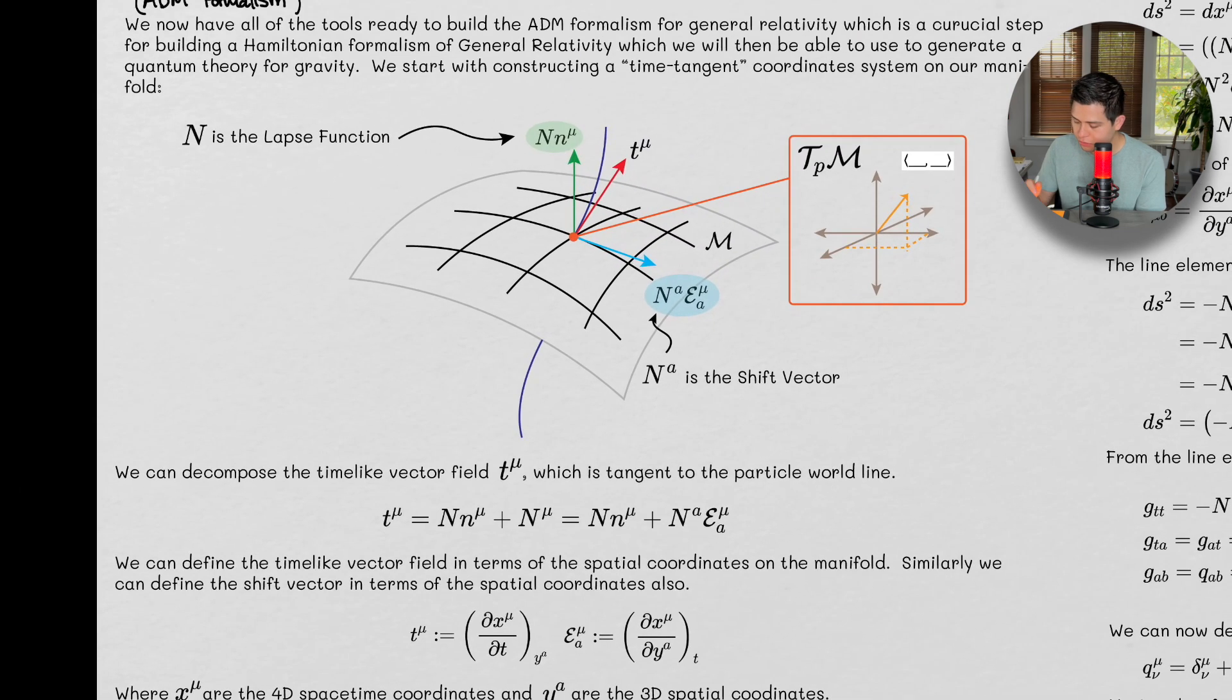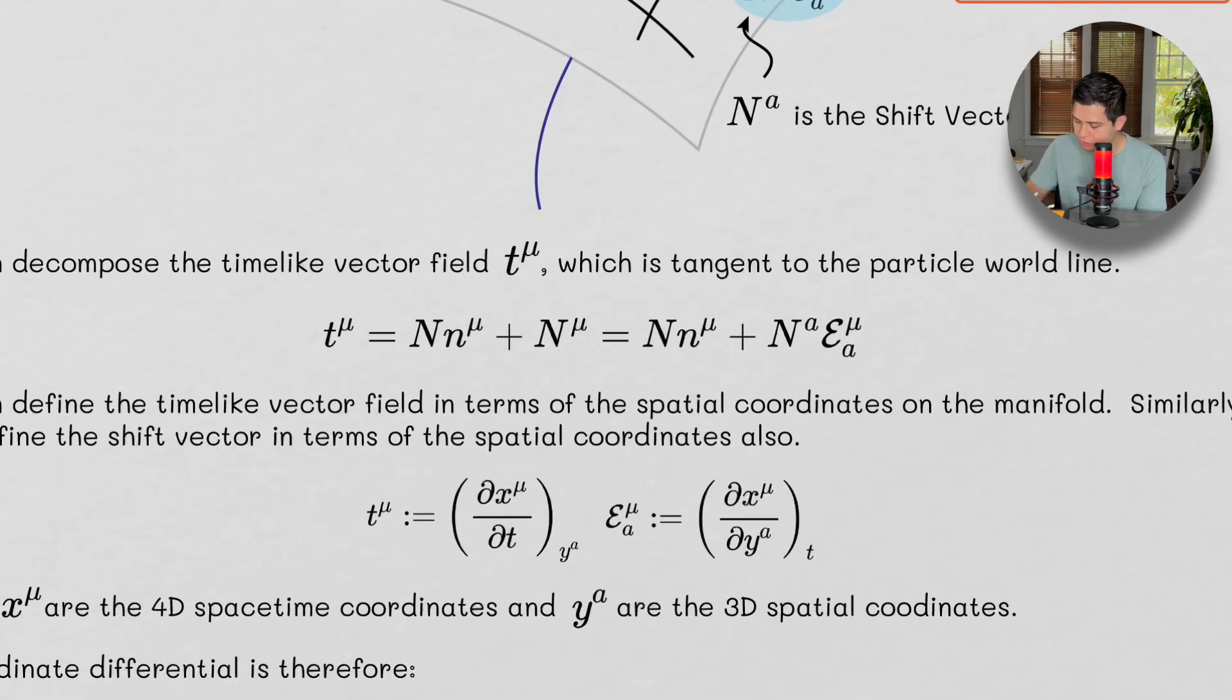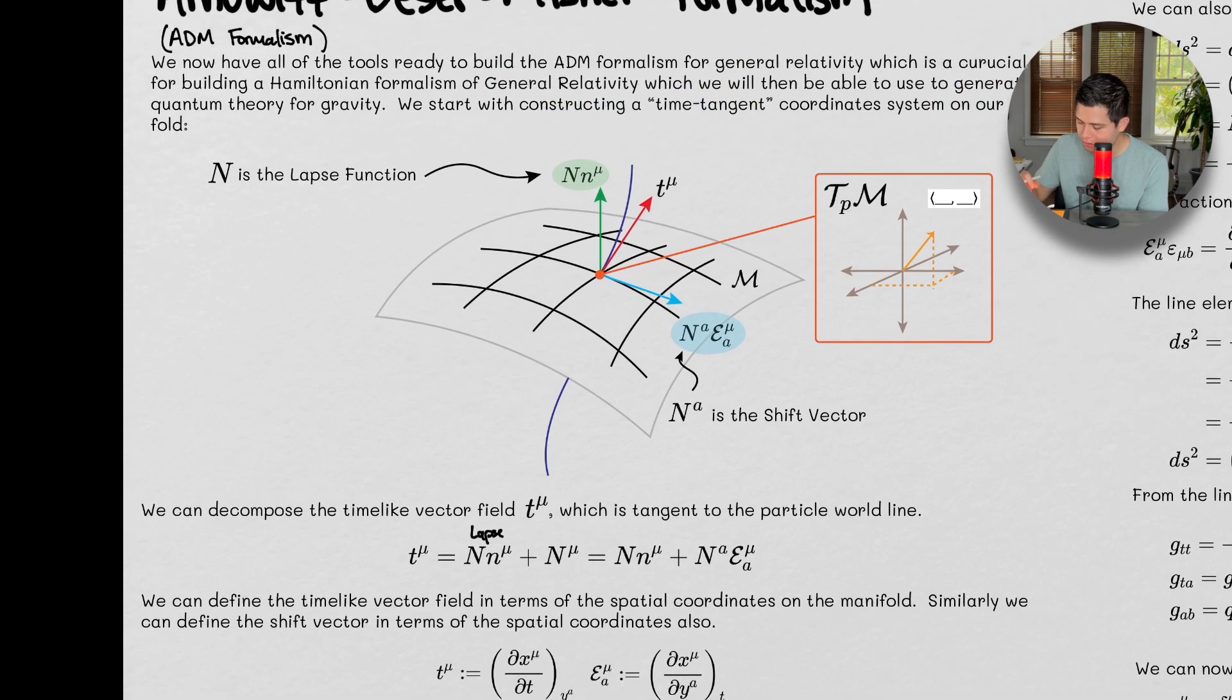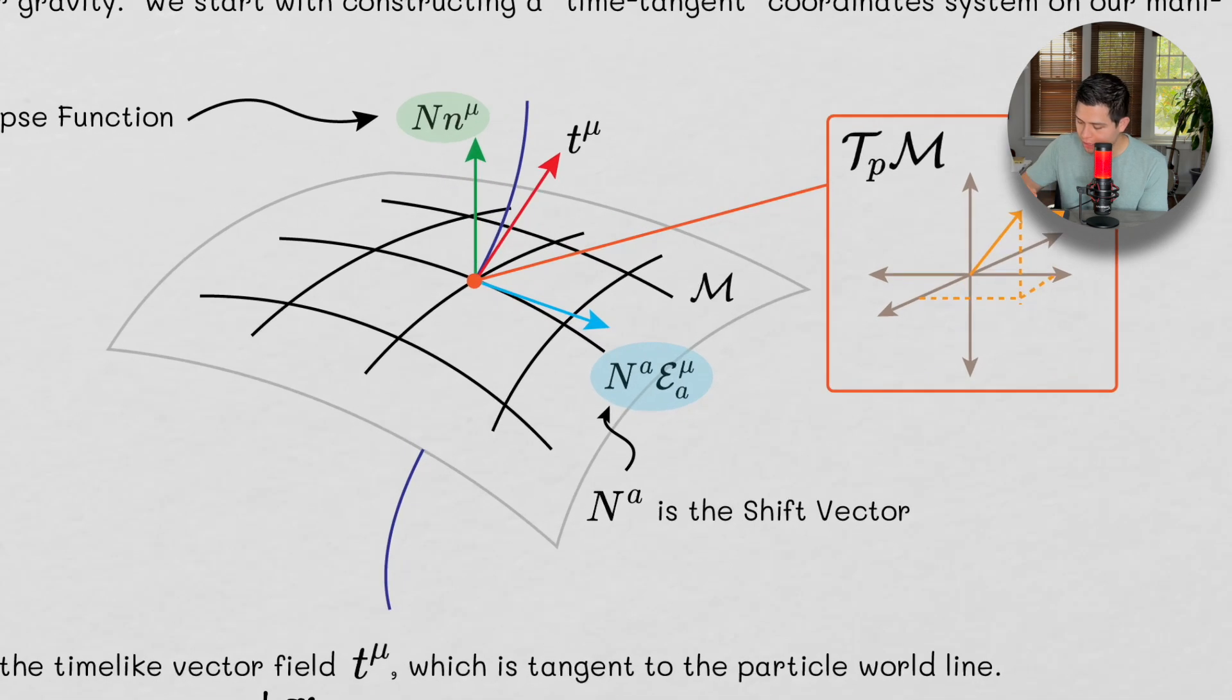So I'll just write down here, the lapse function. So this is the lapse component, not the function, right, because n is the function. Right, n is the function. And this here is the normal vector to our manifold.